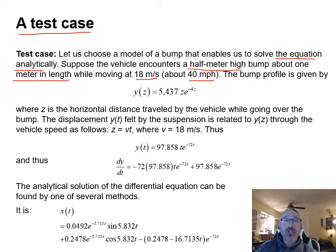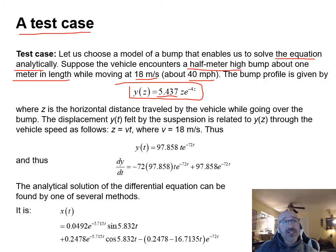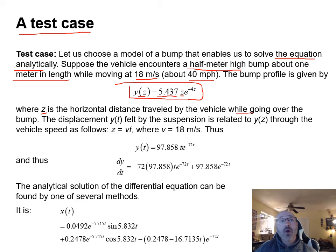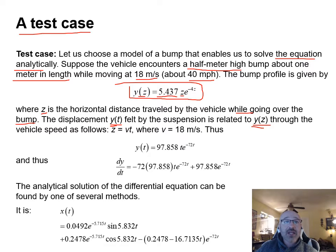The profile of the bump is given as y(z) = 5.473·z·e^(−4z), where z is the horizontal distance traveled by the vehicle while going over the bump. We need to relate y(t) to y(z) through vehicle speed using z = v·t.